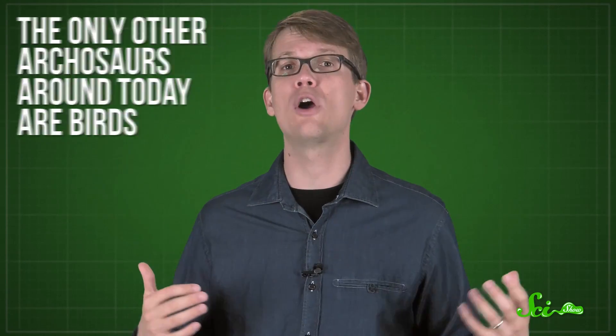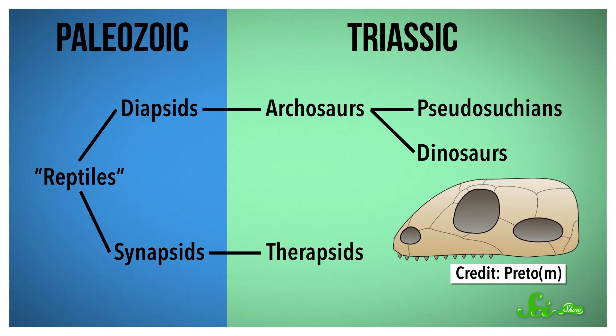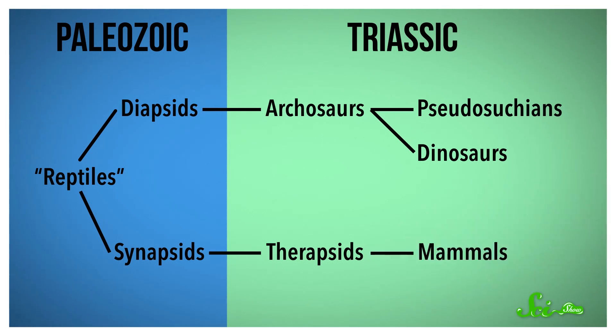So the archosaurs took over from the therapsids, which had mostly died out at the end of the Paleozoic. But some therapsids hung on through the Triassic, and some didn't die out at all — luckily for us. The therapsids are descendants of another major branch of land vertebrates, the synapsids, who are also classified by their skull holes. Synapsids have only one skull opening, not four, and they're the ancestors of mammals.